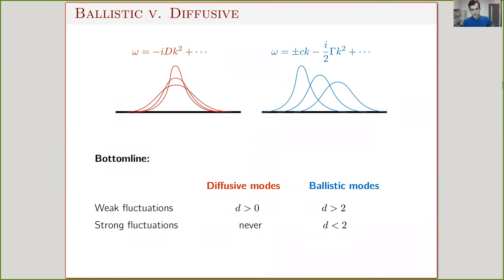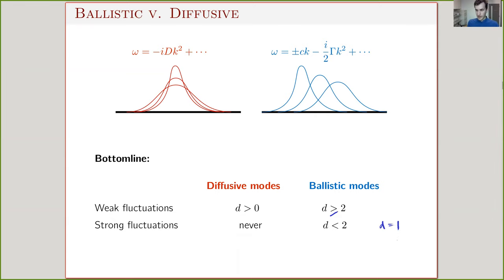To summarize: diffusive modes always have weak hydrodynamic fluctuations. In theories with ballistic modes, interactions are weak when spatial dimension is larger than two, and strong when the spatial dimension is less than two. When the dimension equals two, interactions are actually marginal but can be shown to be marginally irrelevant, so you still have a weakly coupled effective field theory of hydrodynamics. It's really only in spatial dimension equal to one where you have a qualitatively different situation, applying to QFTs in 1+1 dimensions.